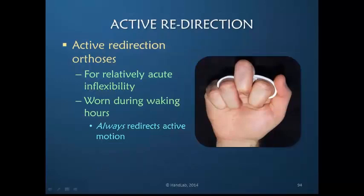Active redirection can be used in a number of ways. In my opinion, the small orthosis for fingers can be very easily used for relatively acute inflexibility. It's worn during waking hours so that it's always redirecting active motion. It's not an exercise orthosis - it's an orthosis to wear full time during the waking hours so that the joint needing the motion is always moving. This example is blocking metacarpophalangeal joint flexion of the long finger and driving flexion to the PIP joint.